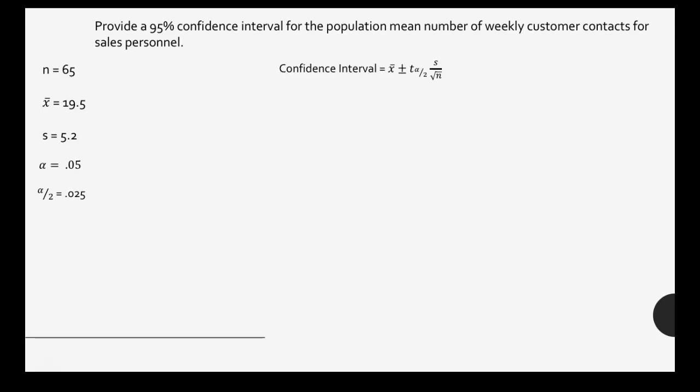We start plugging into our confidence interval formula again. Our x̄ is still 19.5, our s is still 5.2, and our n is still 65. We need to find the t-score again — degrees of freedom are still 64, found by taking n minus 1. But now the area in the upper tail is 0.025, so the t-score that corresponds is 1.998. Taking that t-score and multiplying by our standard error gives a margin of error of 1.289. So we take 19.5 and add and subtract our margin of error, giving us a confidence interval of 18.211 to 20.789.